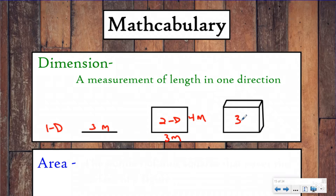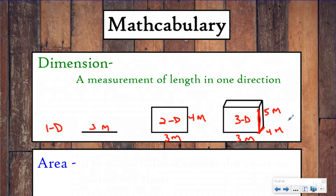Our cube is three dimensional, or 3D — again you hear that word a lot with video games. Why is it 3D? Because you can measure it in three dimensions: you have a length, you have a width (some people call this depth), and then you have the height. So you can measure this cube in three directions, which gives it three dimensions.